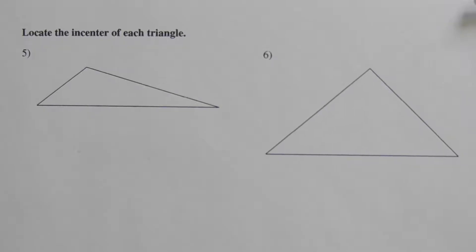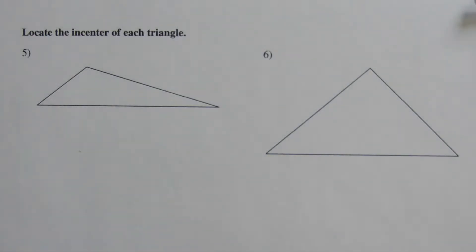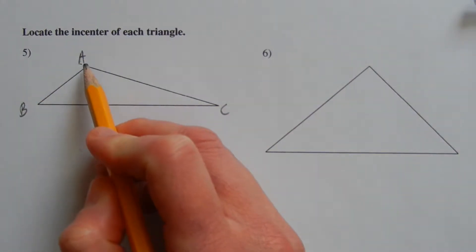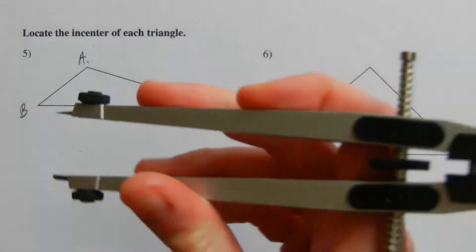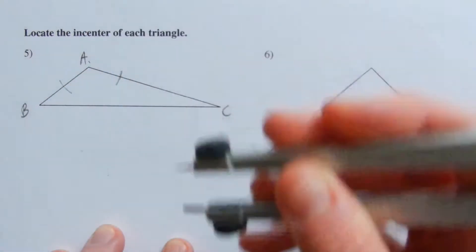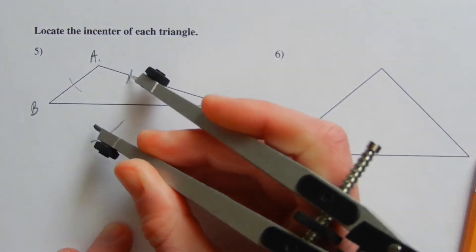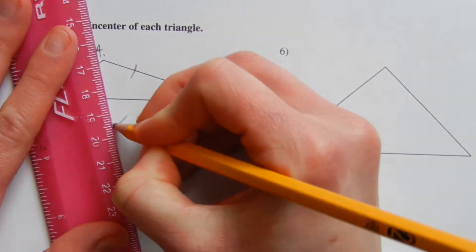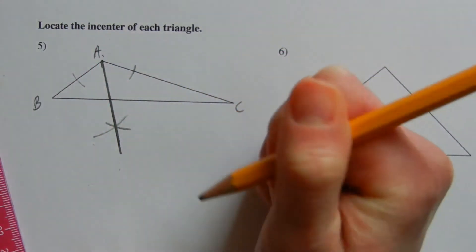On the second page we're going to be locating the incenter of each triangle. The incenter is the point of intersection of the angle bisectors within a triangle. Labeling this triangle A, B, C, there's an angle bisector for each vertex, but we only need two to find the intersection. We start with the angle bisector of A — making a mark on segment AB and a mark on segment AC the same distance from vertex A, then from each intersection point make arcs to find where they meet, and draw a line from vertex A through that point.